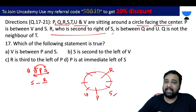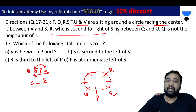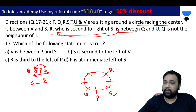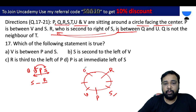We find the second right of S, which gives us V. R is between Q and U.